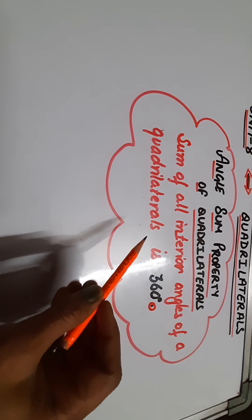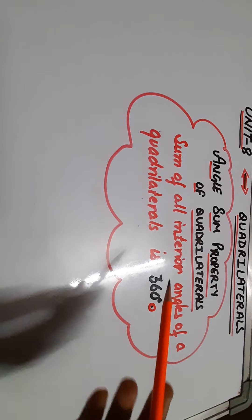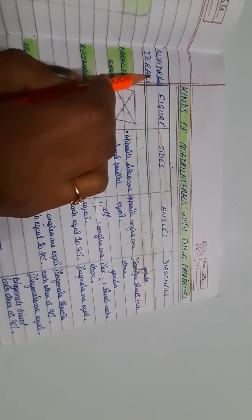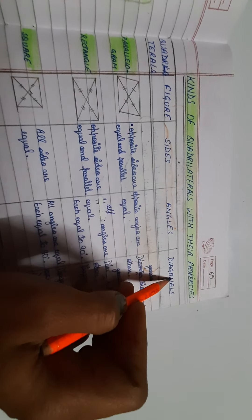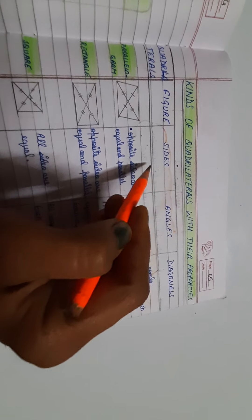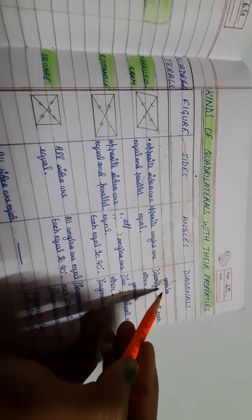Dear students, before starting the chapter, you must note down this statement in your notebook. Let us discuss the properties of quadrilaterals using a table. Please make 5 columns: column 1 contains the name of the quadrilateral, column 2 is the figure, column 3 gives details about the sides, column 4 about the angles, and column 5 about the diagonals.